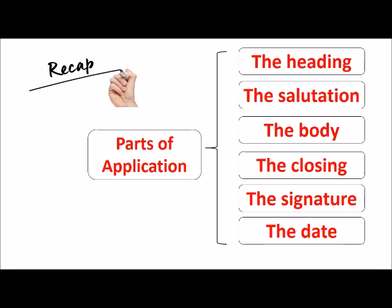Let's recap. There are six parts of an application. Number one is the heading. Number two is the salutation. Number three is the body. Number four is the closing. Number five is the signature. And the last part of the application is the date.